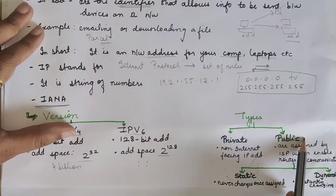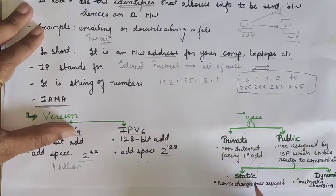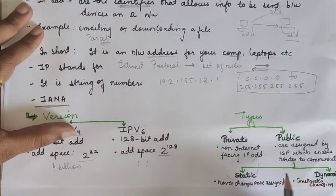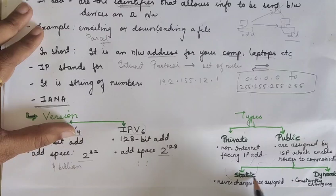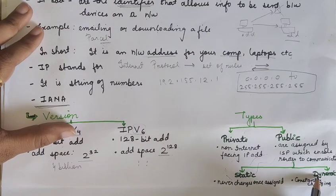Now, public IP address, you can say that it is classified or more divided into 2 addresses that is the static IP address and the dynamic IP address.